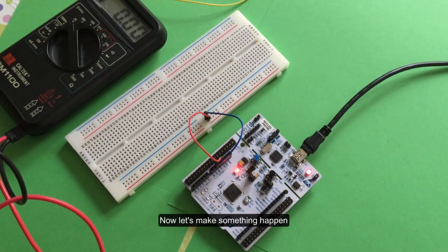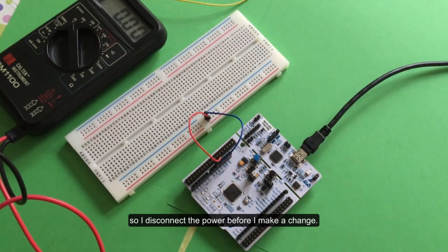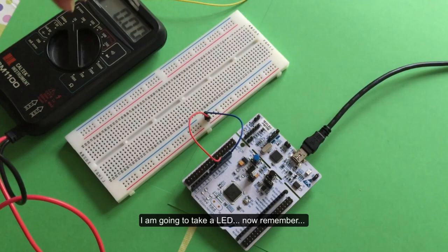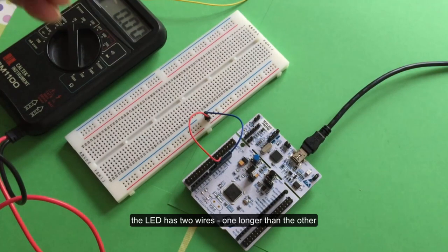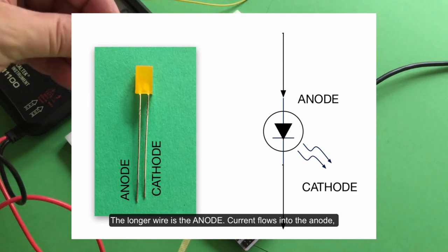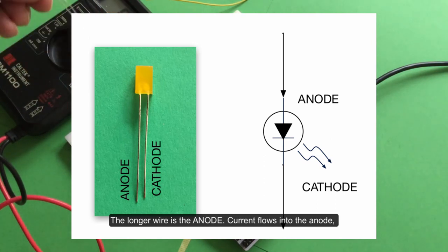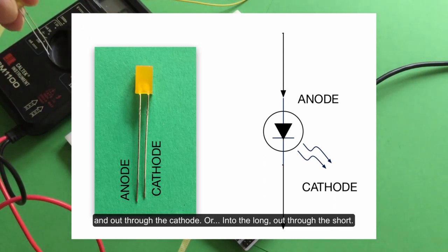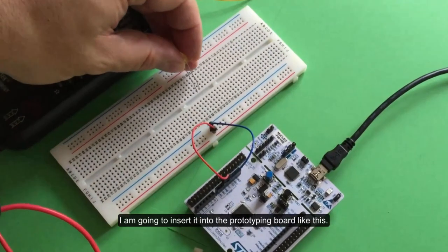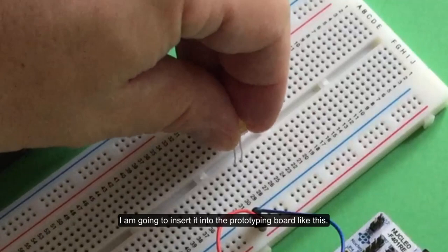Now let's make something happen. I'm going to disconnect my power before I make a change and take an LED. Remember, the LED has two wires, one of which is longer than the other. The longer one is the anode. Current flows into the anode and out through the cathode, or into the long, out through the short. I'm going to put it into the prototyping board like this.